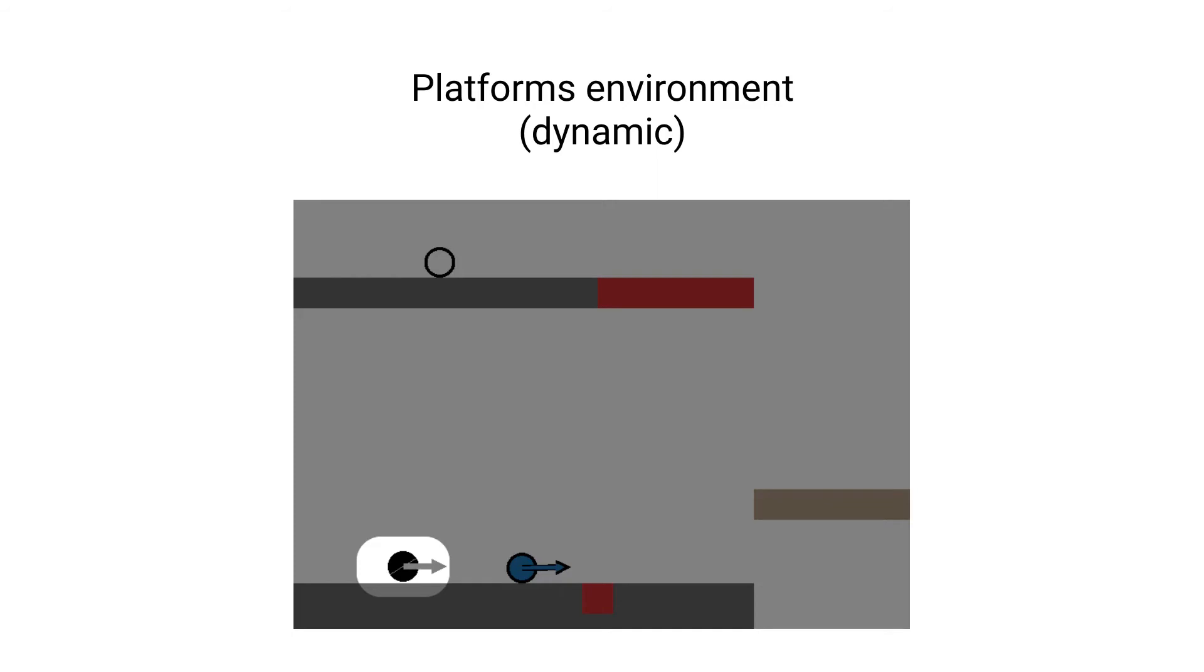The agent controls a marble and pursues, depending on the algorithm, either a conventional subgoal or a timed subgoal. The platform on the right moves up and down perpetually, while the trigger on the floor sets another platform in motion. The objective for the agent is to reach the goal on the higher platform, which requires rolling onto the trigger at the right time.